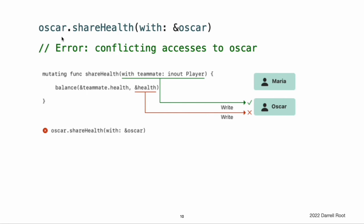However, if you pass Oscar as the argument to shareHealth with Oscar, there is a conflict. The mutating method needs write access to self for the duration of the method, and the in-out parameter needs write access to teammate for the same duration. Within the method, both self and teammate refer to the same location in memory, as shown in this figure. The two write accesses refer to the same memory, and they overlap, producing a conflict.